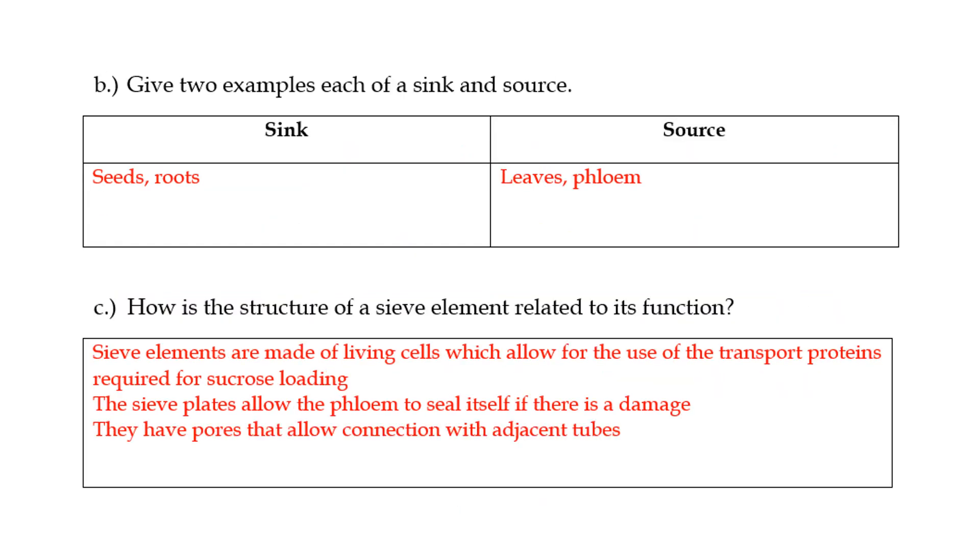Two examples of a sink and a source. So a sink is always, remember that a sink is where the sucrose is stored after it has been made. And the source is where it is made, in quotes. So a seed is definitely a sink because once the sucrose gets there, it's simply stored. You can also have the roots.